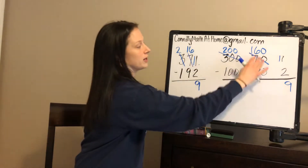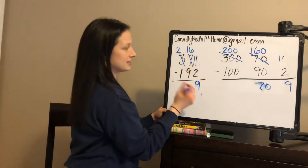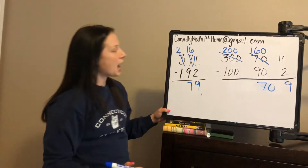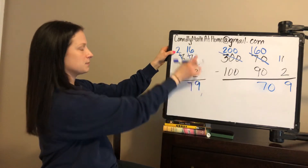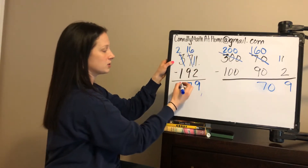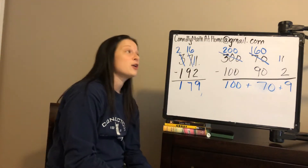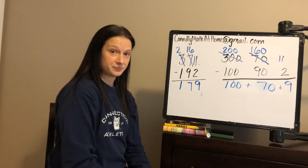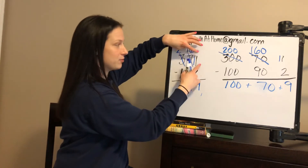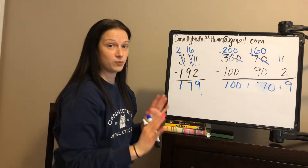Now we've regrouped, so we can do 16 minus 9. Now we go to the 100s place. We've taken care of the 1s place and the 10s place. We go to the 100s place: 2 minus 1. We're thinking 200 minus 100 is 100. So that is what's happening when we're doing the U.S. standard algorithm for subtraction. You can see the one group of 10 moving over to the 1s place, and the 10 groups of 10 moving over to the 10s place. And that is why we are regrouping like that.